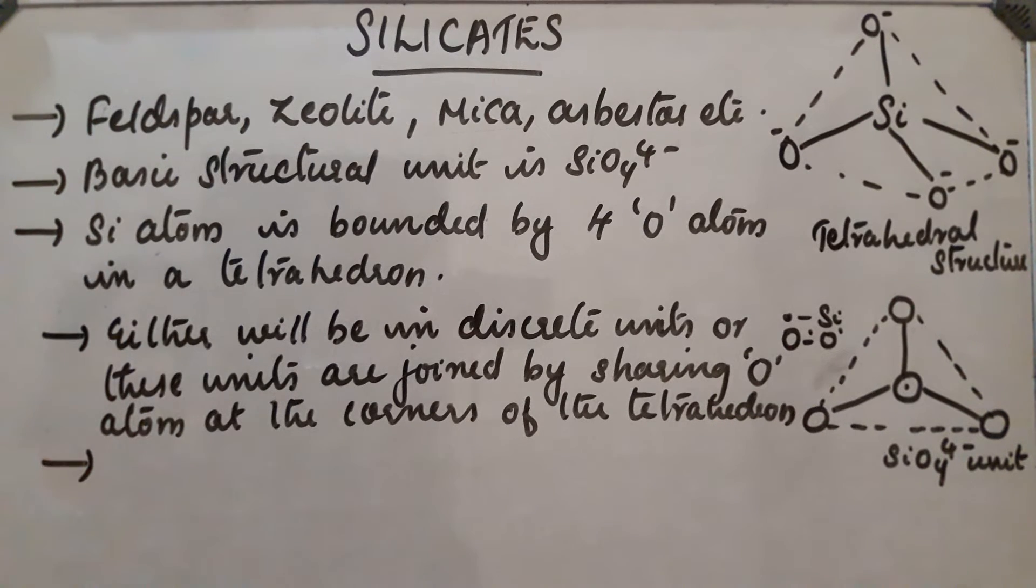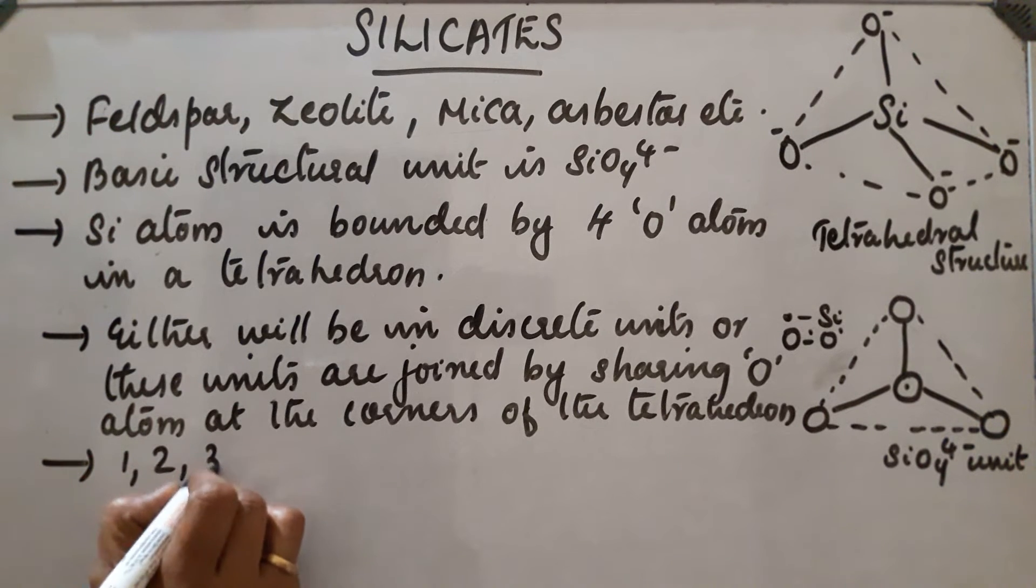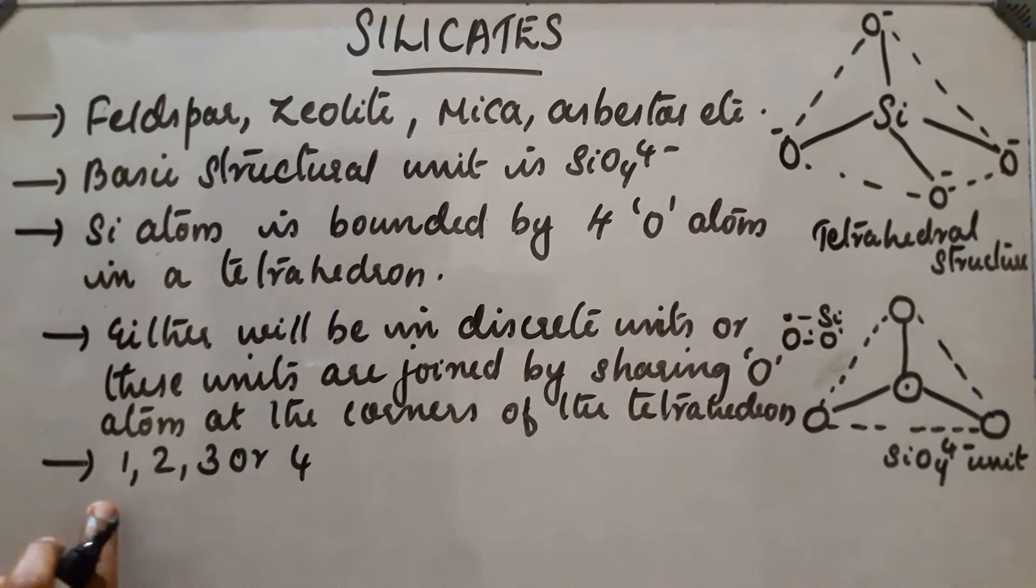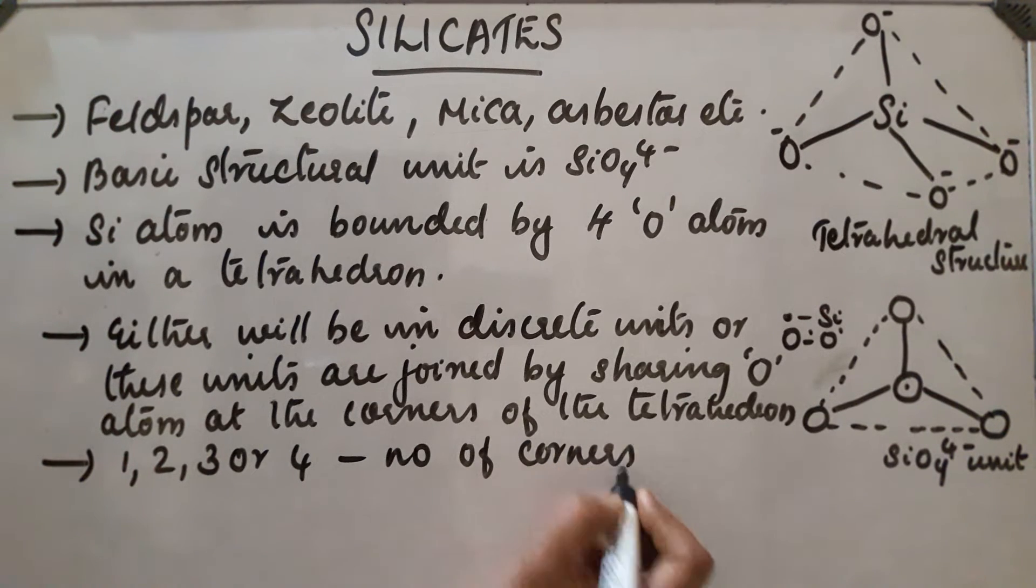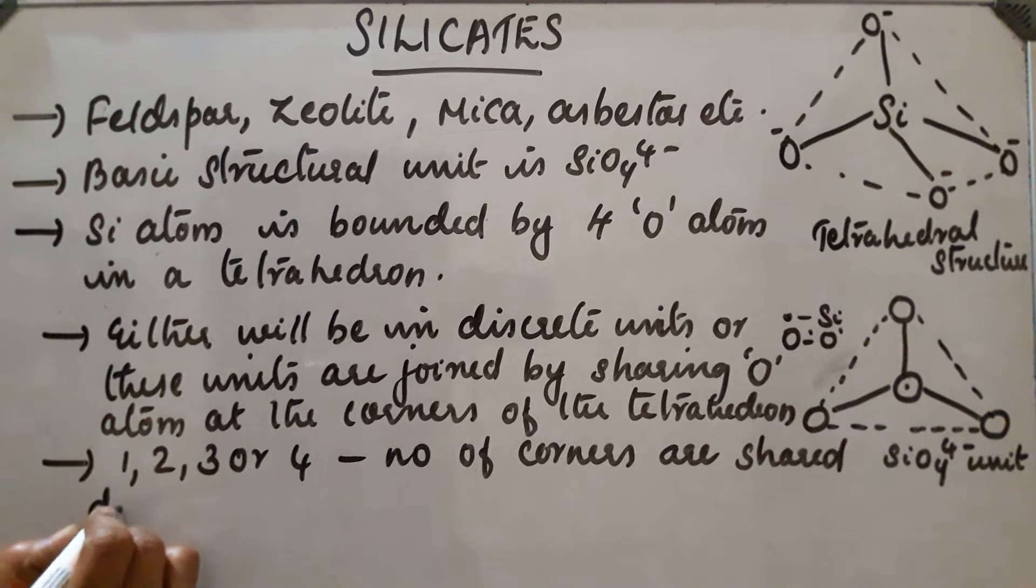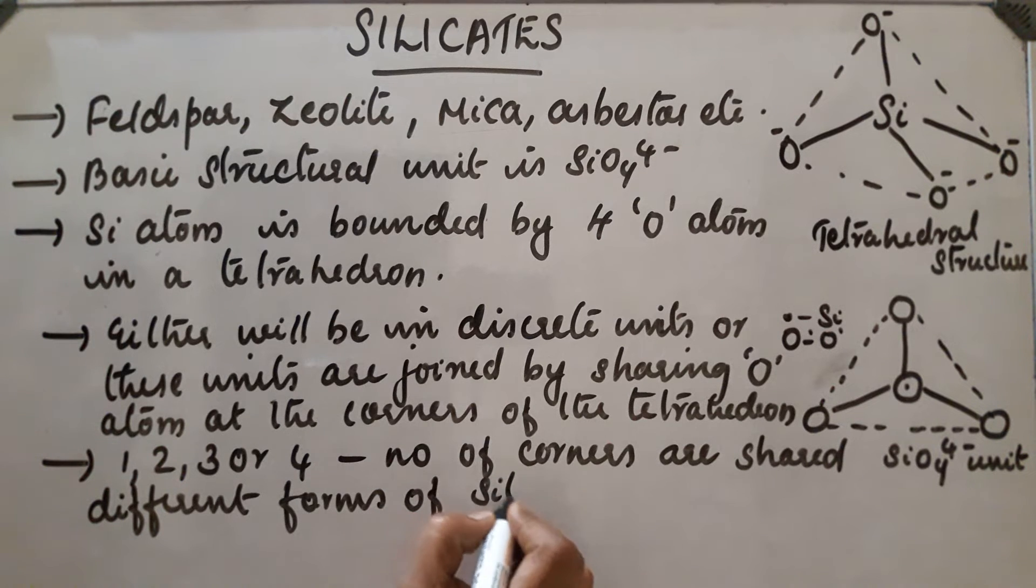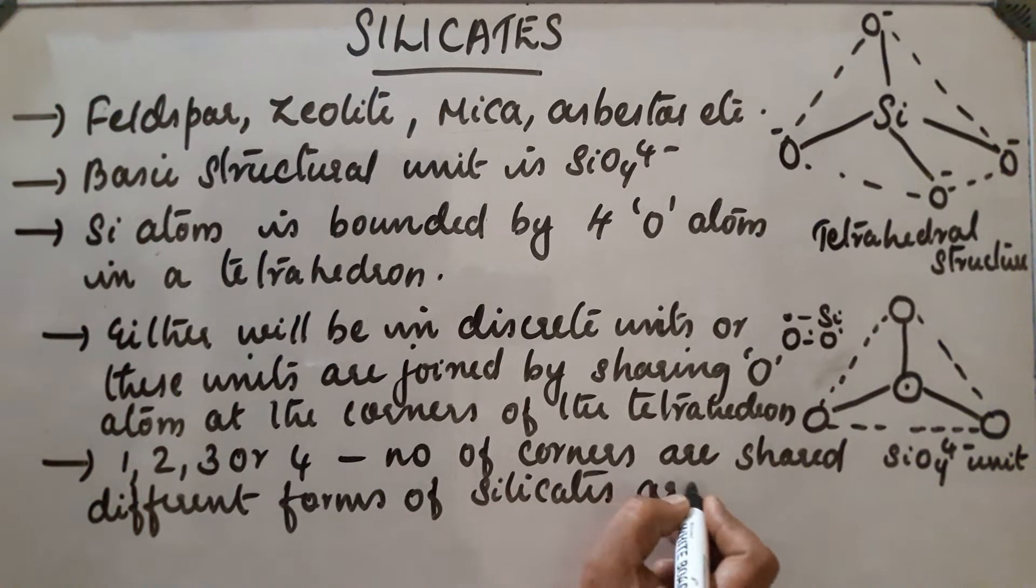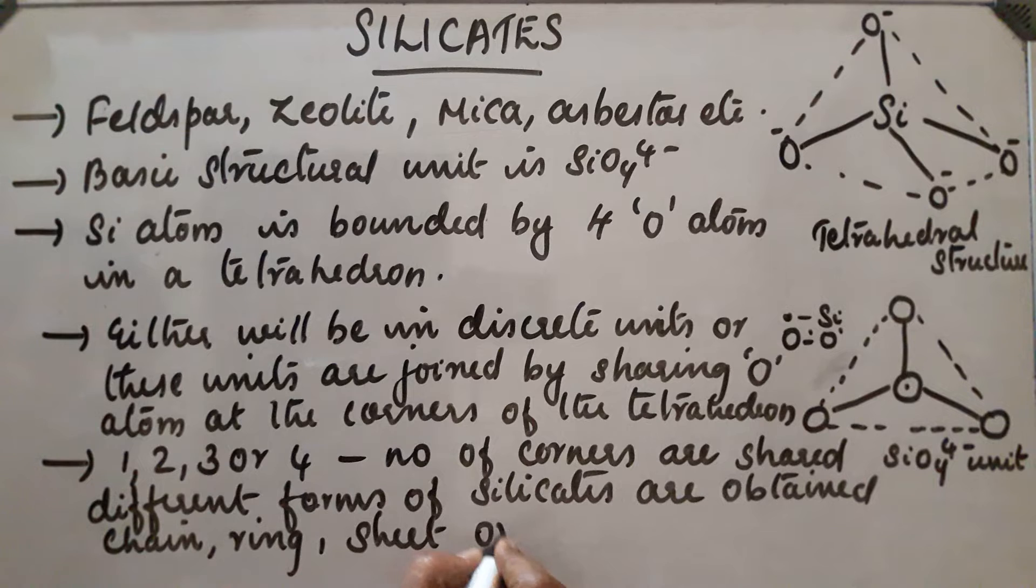Depending upon the number of oxygen atoms shared - if 1, 2, 3 or 4 oxygen atoms are shared at different corners - different forms of silicates are obtained. The different forms will be chain form, ring form, sheath form, or 3D structure. If all 4 oxygen atoms are shared, then the structure will be a 3-dimensional structure.